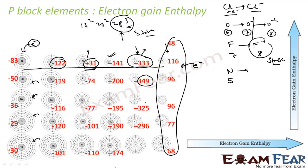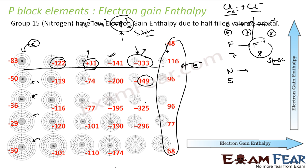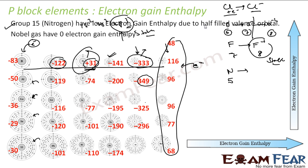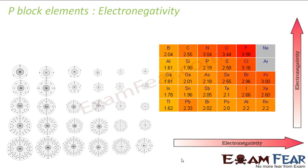To summarize the typical trend: group 15 elements like nitrogen have low electron gain enthalpy because of the half-filled valence orbital. Noble gases have positive electron gain enthalpy because they are stable and happy. The next trend to discuss is electronegativity, which increases from left to right — boron is 2.4, carbon 2.55, nitrogen 3.0, oxygen 3.4, fluorine 3.9.